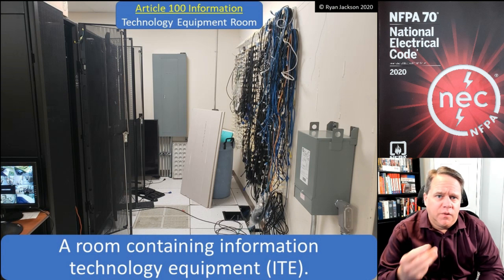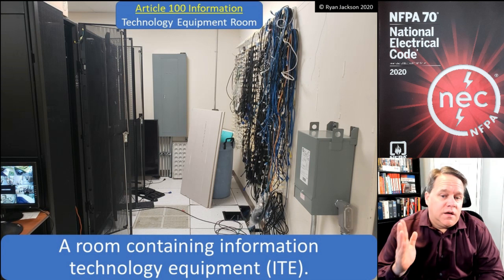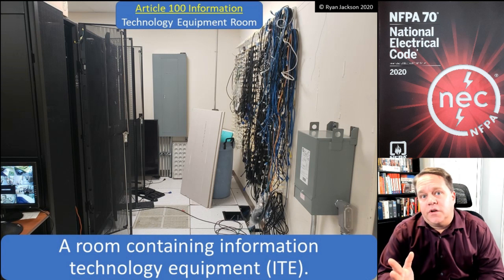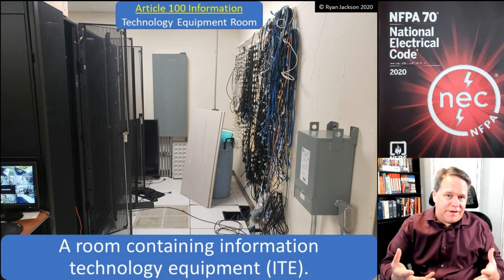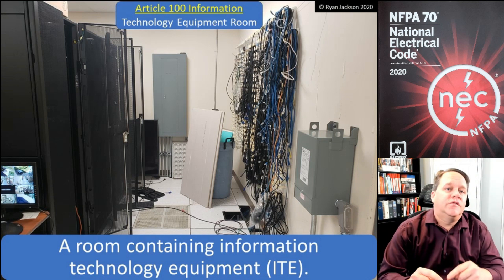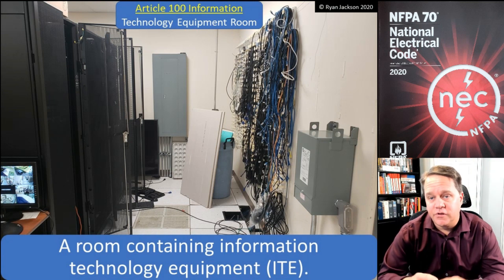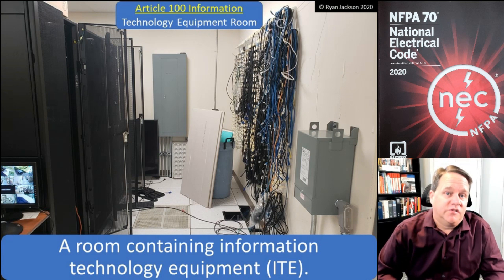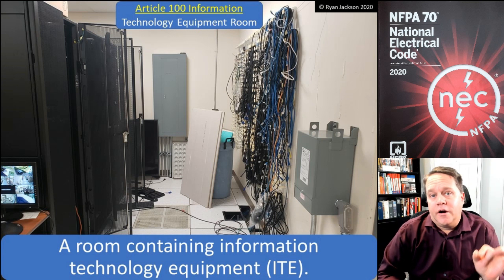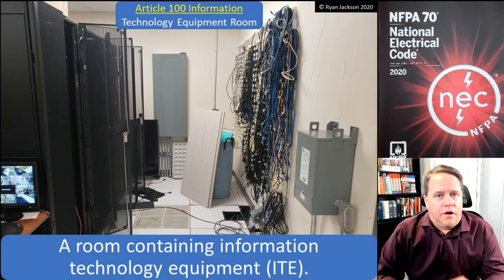They had to figure out a way to accommodate IT rooms, and what they ended up doing is creating Article 645. The crux of 645 is that back in the day you really couldn't use plenum rated cables in some IT equipment rooms. We need plenum rated cables in air handling spaces in case there's a fire, because the smoke from non-plenum rated cables is very toxic and we don't want it traveling through the building's air handling system and killing people.